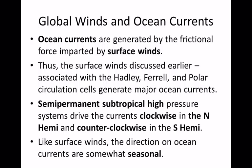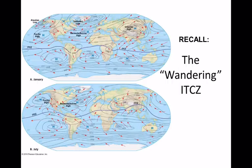When we look at ocean currents, look for those semi-permanent highs — like the Bermuda high — between the Hadley and the Ferrel cells, where winds go clockwise around them. And semi-permanent lows between the Ferrel and the Polar cells, where winds go counterclockwise in the Northern Hemisphere. This is just showing winds, not ocean currents yet.